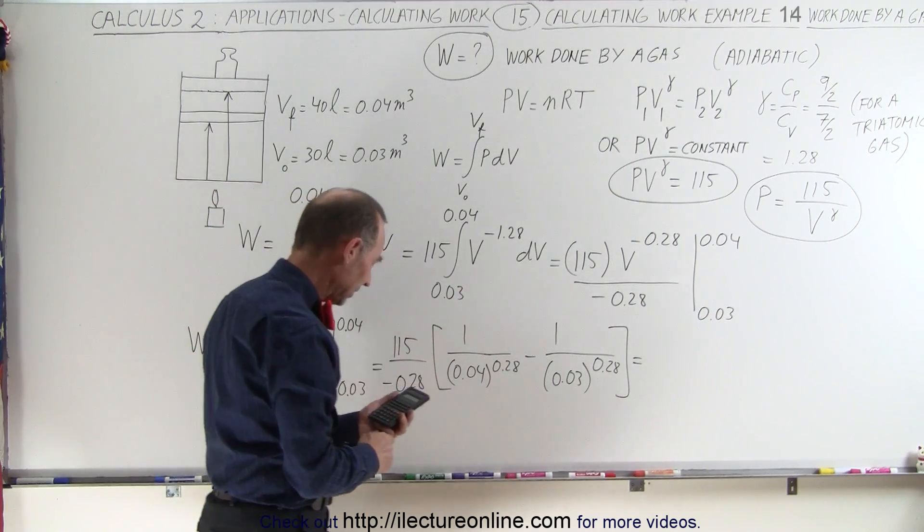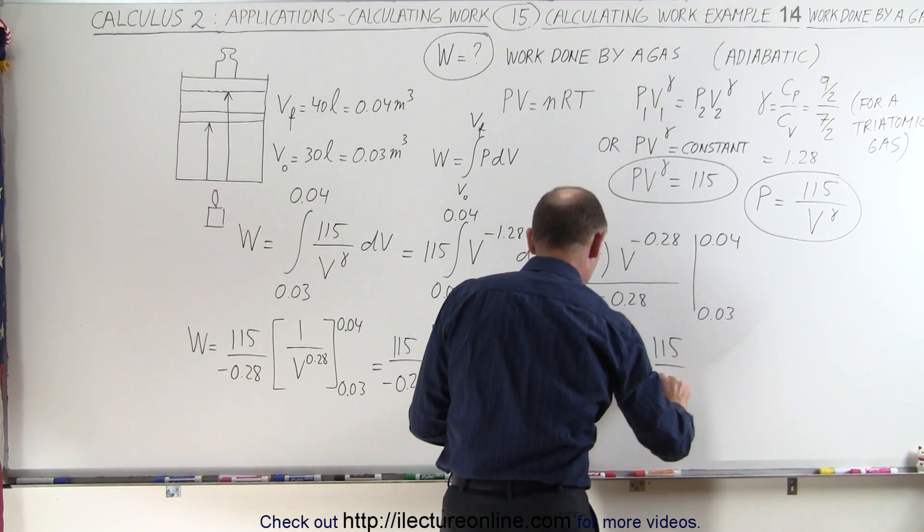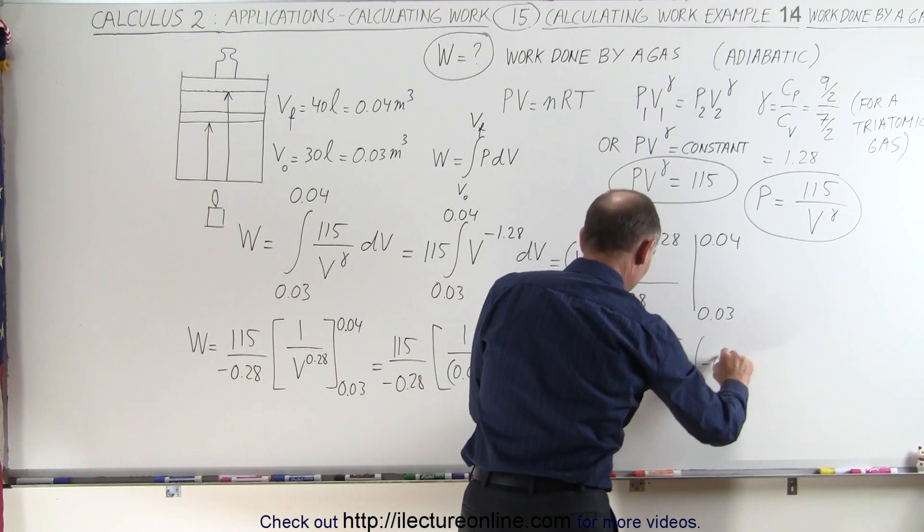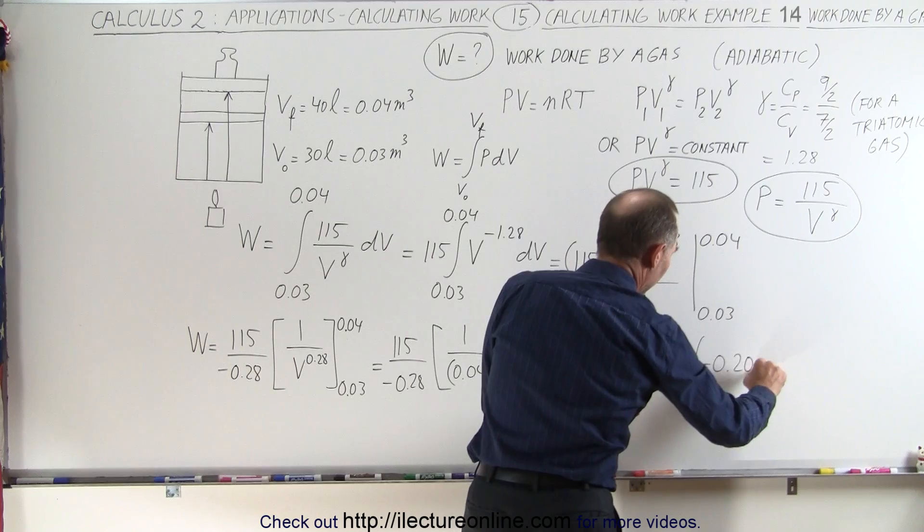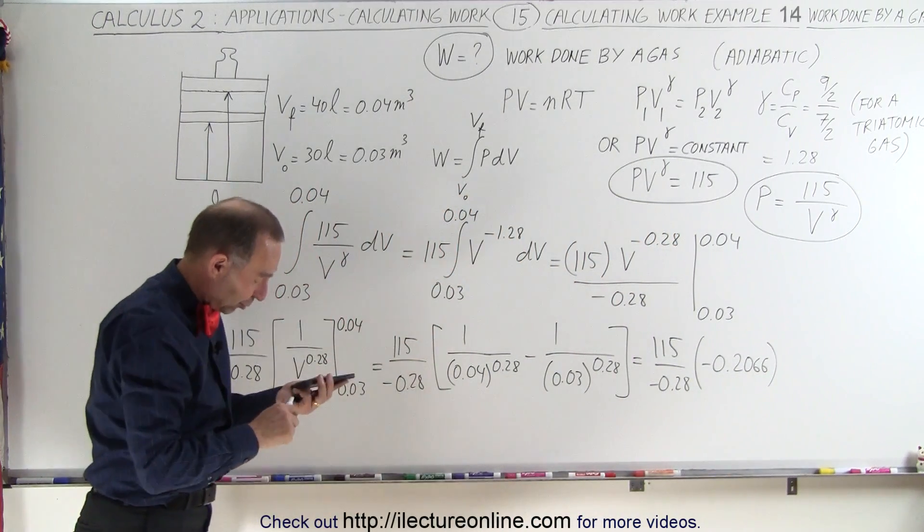So this whole thing, let me write down what that looks like. We get 115 divided by negative 0.28 times negative 0.2066. In case you want to try this yourself with your calculator, that's what you should get for what's inside the brackets.